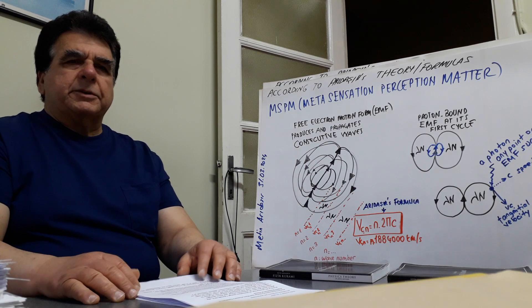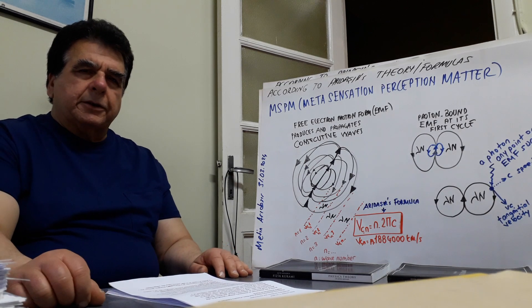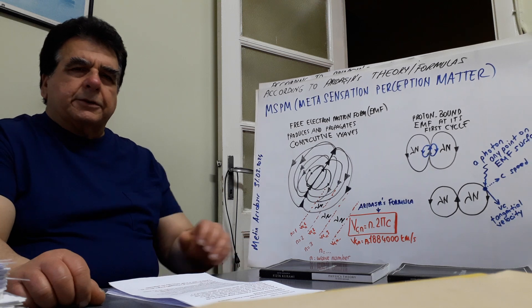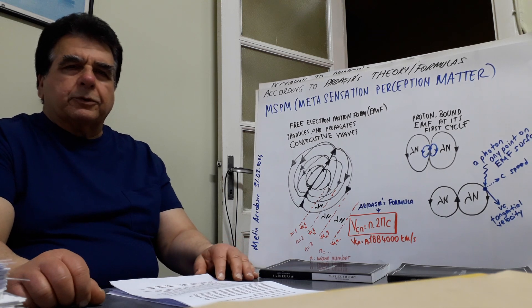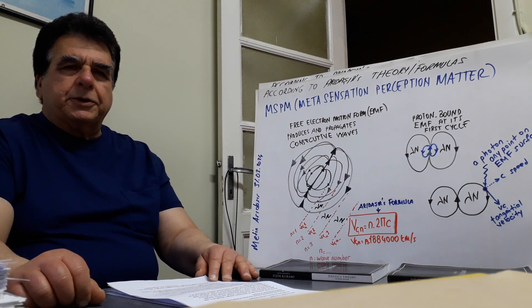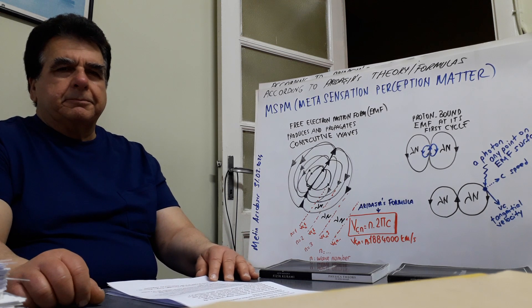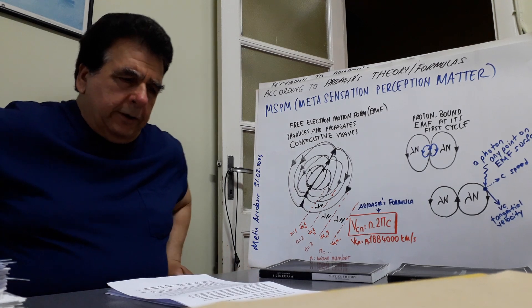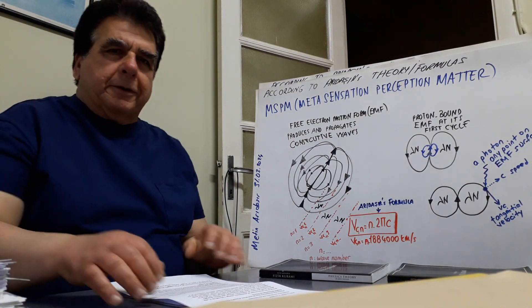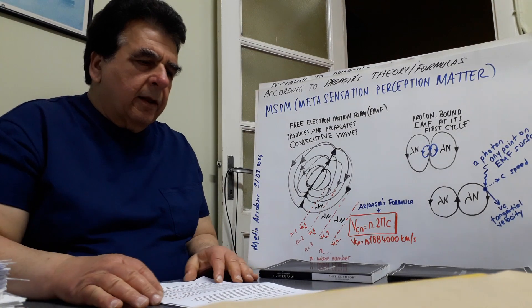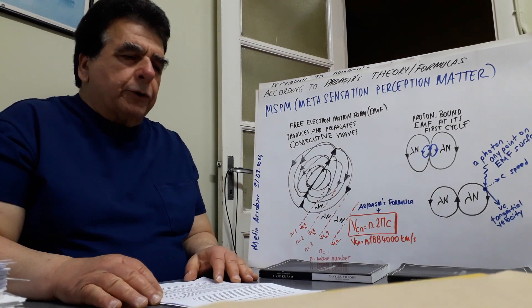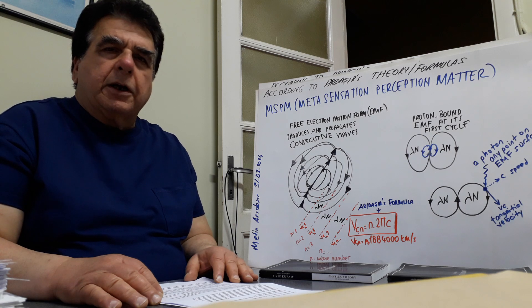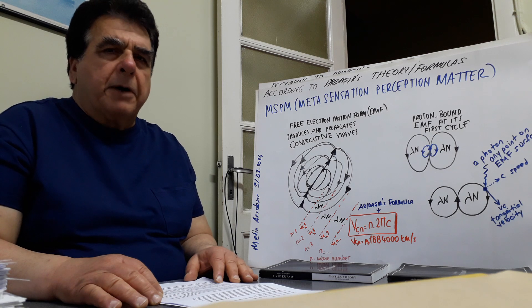Hello, my name is Metin Adadashir. This is the 303rd part of the explanation of my theory. According to my theory and my formulas, photon has elementary charge and mass.